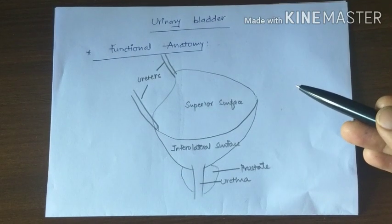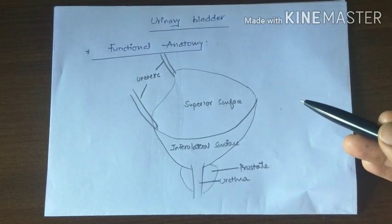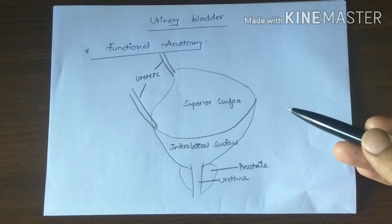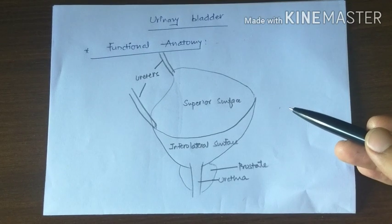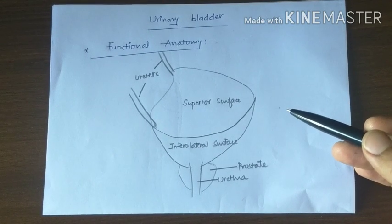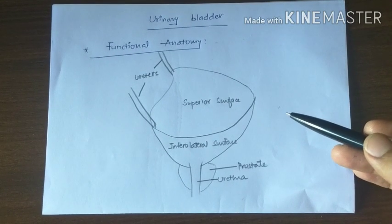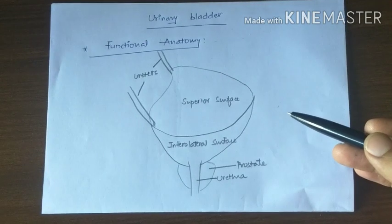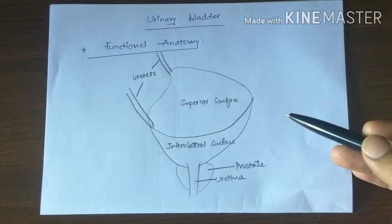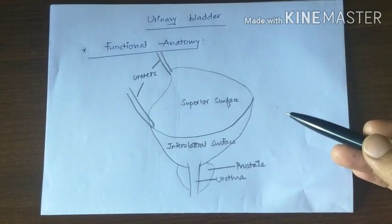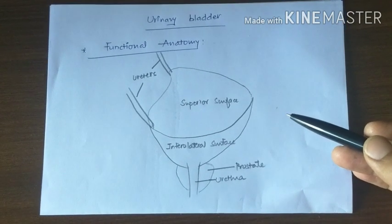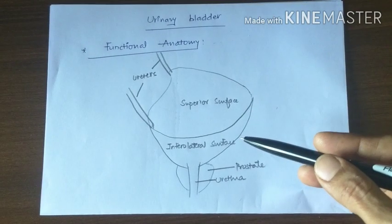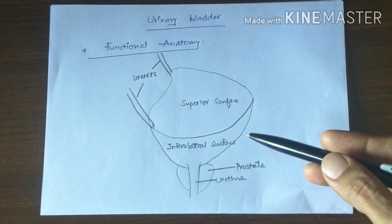The urinary bladder is a hollow muscular organ and a temporary reservoir of urine. It has two parts: the body, which is the major part where urine collects, and the neck, which is a funnel-shaped extension of the body. It has a superior surface and inferolateral surfaces.